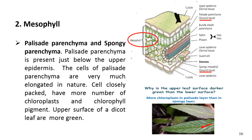The cells of the palisade layer contain a greater number of chloroplasts; as a result, the chlorophyll pigment is also more concentrated. Due to this, the upper surface of dicot leaves is mostly darker green in color compared to the lower surface. You can also see the adaxial and abaxial color of the leaf in the lower right picture.